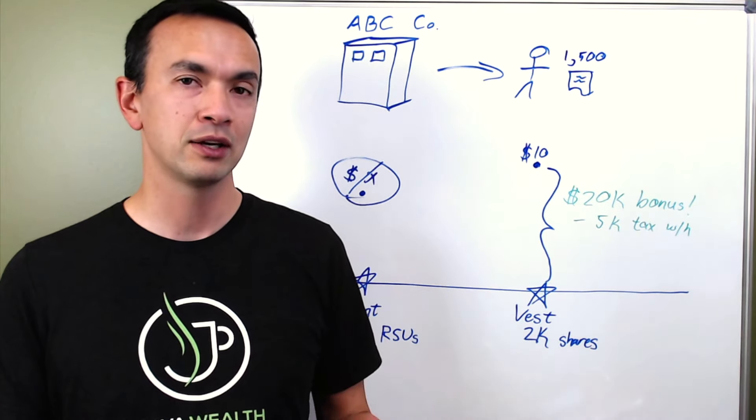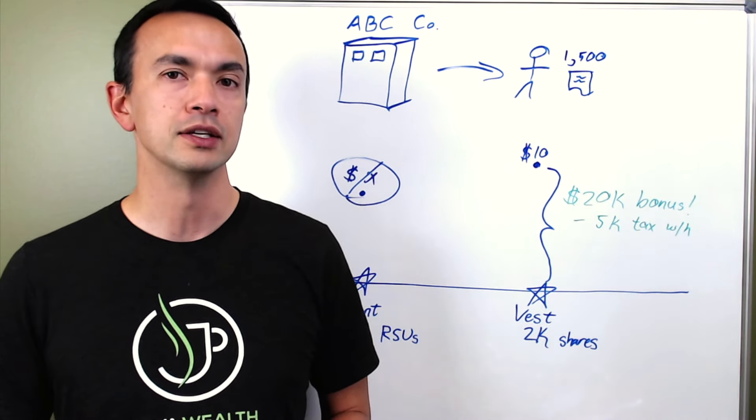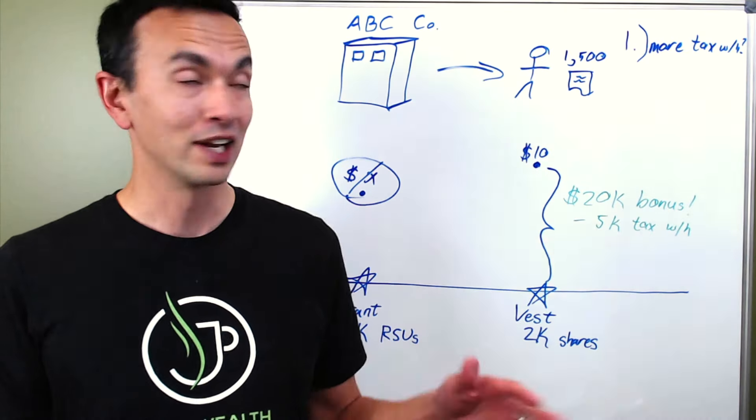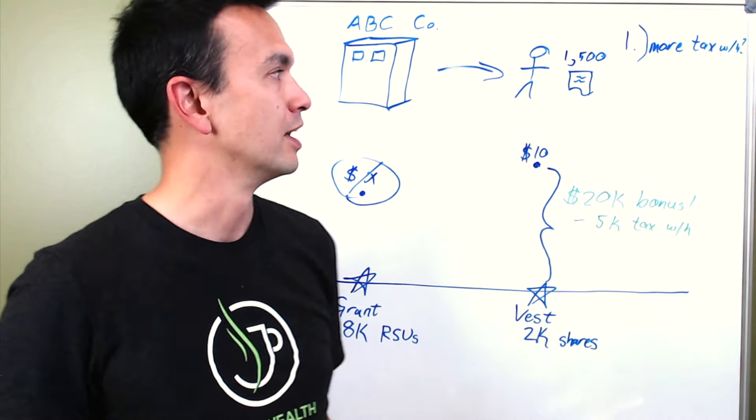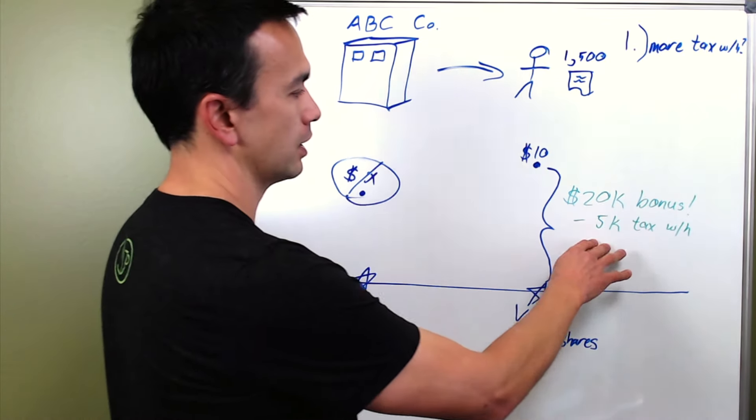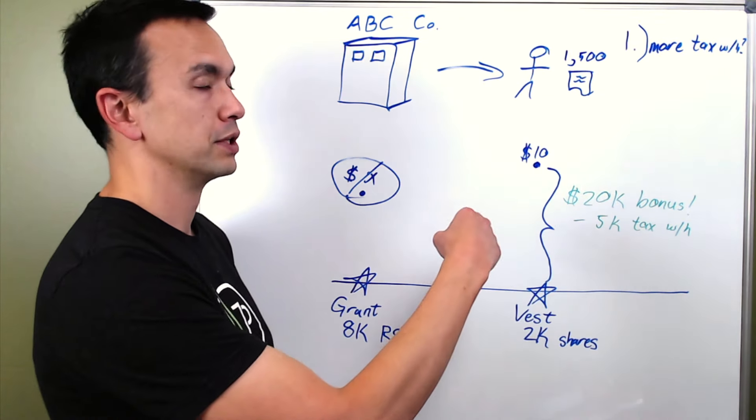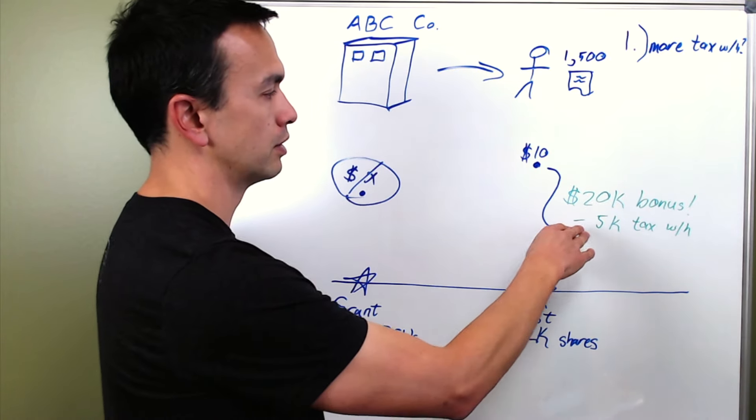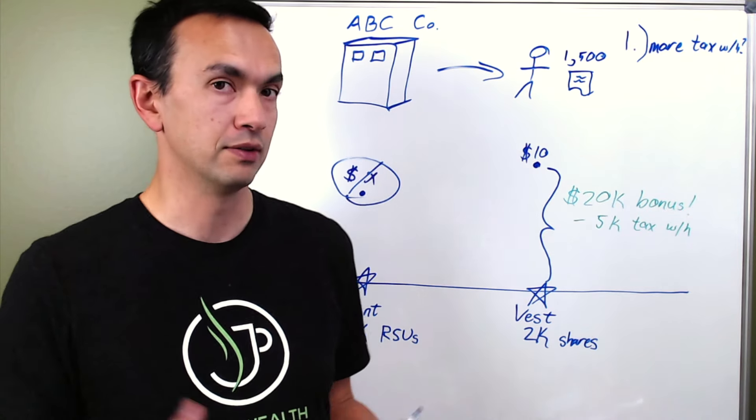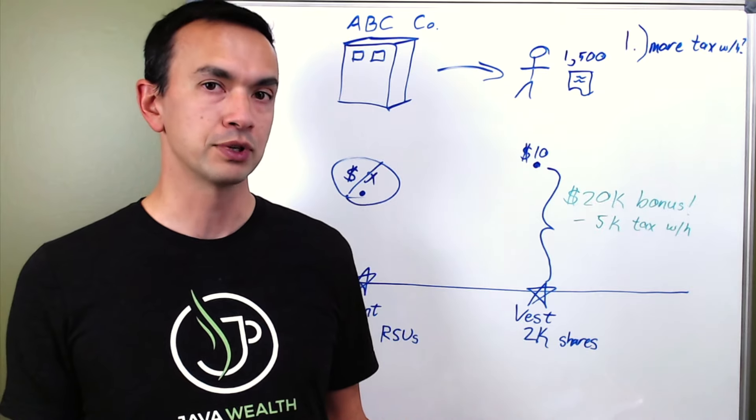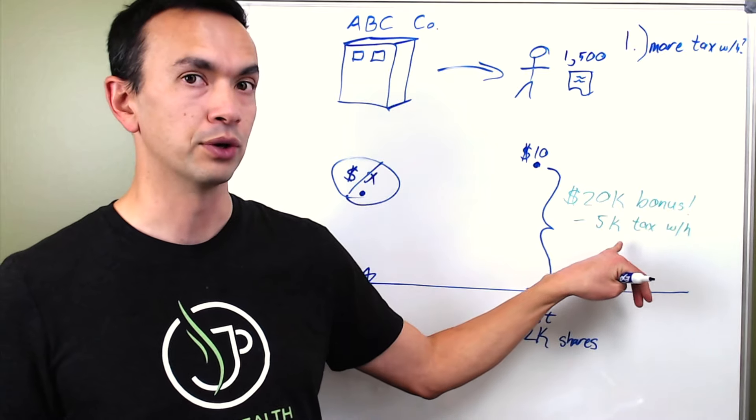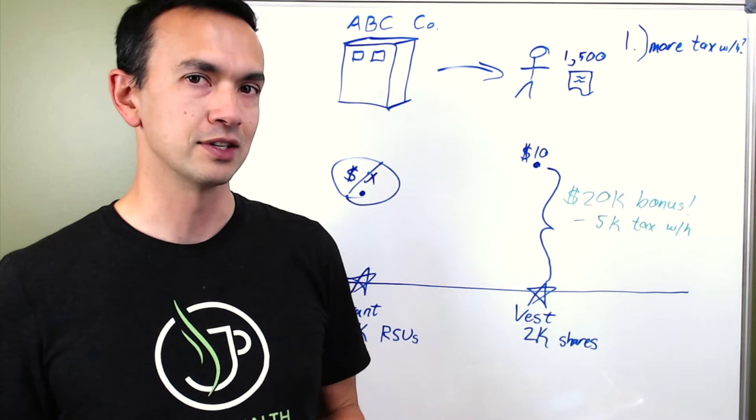And there are two main questions that you need to answer. And the first one is, do you need to withhold any more taxes? So your company has withheld a certain amount, but it's very common for the company to just withhold a standard 22% from a federal tax rate. And so if an example, you're at the 32% tax bracket and there's actually another $2,000 that you should withhold in order to pay taxes on this $20,000 bonus.